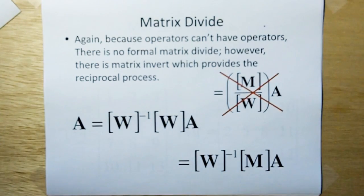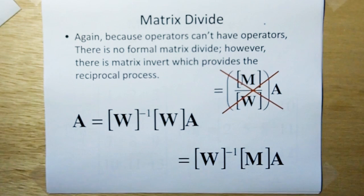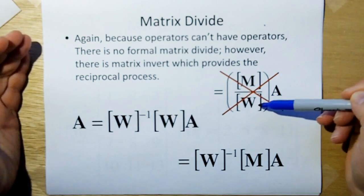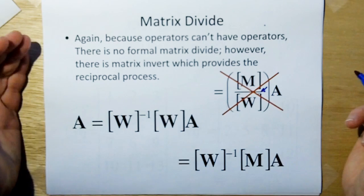So matrix divide. Again, because operators can't have operators, there's no formal matrix divide. However, there is matrix invert, which provides the reciprocal process to stand in for what would be normal matrix division. When we get to Q algebra, we're going to show you matrix division using a reciprocal process like this as well.